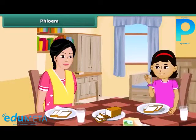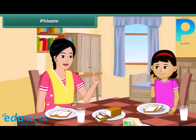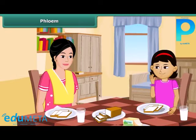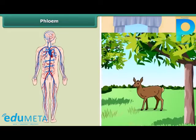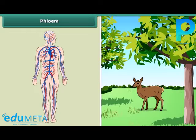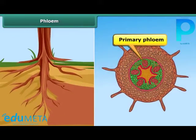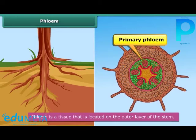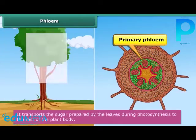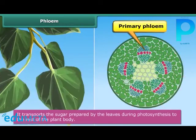Rhea is eating her breakfast in a hurry. Her mother advises her to chew the food properly so that the nutrients are absorbed by the body. Human beings and animals have a circulatory system that transports nutrients absorbed from food to different parts of the body. Plants have phloem to perform this task. Phloem is a tissue located on the outer layer of the stem, and it transports the sugar prepared by the leaves during photosynthesis to the rest of the plant body.